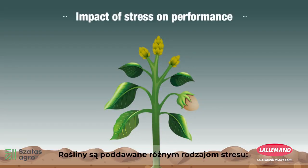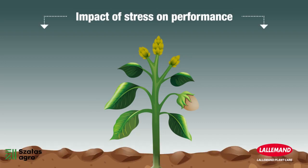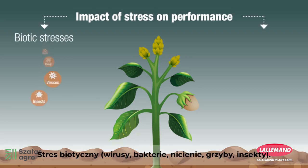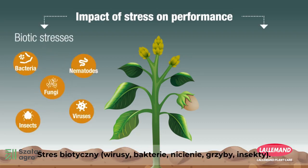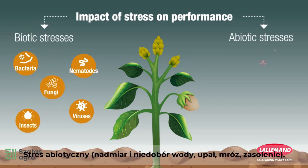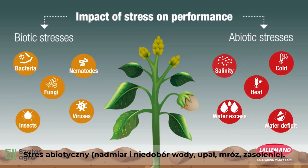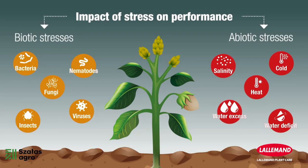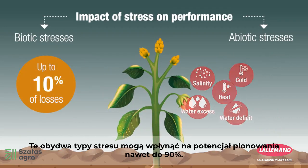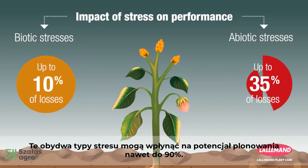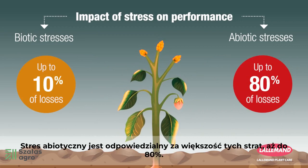The plant is subjected to different types of stress: biotic stresses and abiotic stresses. These stresses can impact yield potential by up to 90%. Abiotic stresses account for most of these losses.